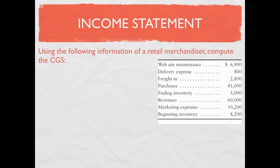I always like to create a T-account for this. Before we get started, let's look at two items that sometimes cause problems: delivery expense and freight in. These are not the same thing. Delivery expense is a selling expense — it's when the seller ships goods to the buyer, so it's an expense to the seller. Freight in, on the other hand, is when the buyer pays to get the goods to themselves. Freight in is not an expense; it's included as part of the cost of your inventory. It's very important to make that distinction.